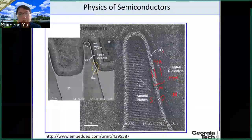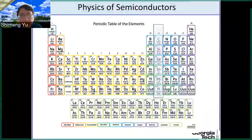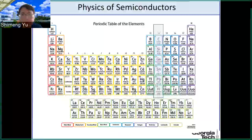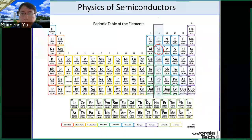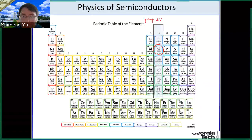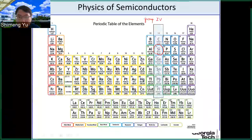Let's look at silicon. Silicon is number 14 in the periodic table. It is in Group 4. Along Group 4 we may have other elements like carbon and germanium.